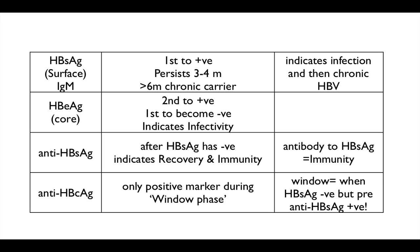Anti-HB core antigen is unique — it is the only positive marker during what we call the window phase. The window phase is when the surface antigen has become negative but it is before the anti-surface antigen becomes positive, so this is the only marker you can detect just before you become immune.